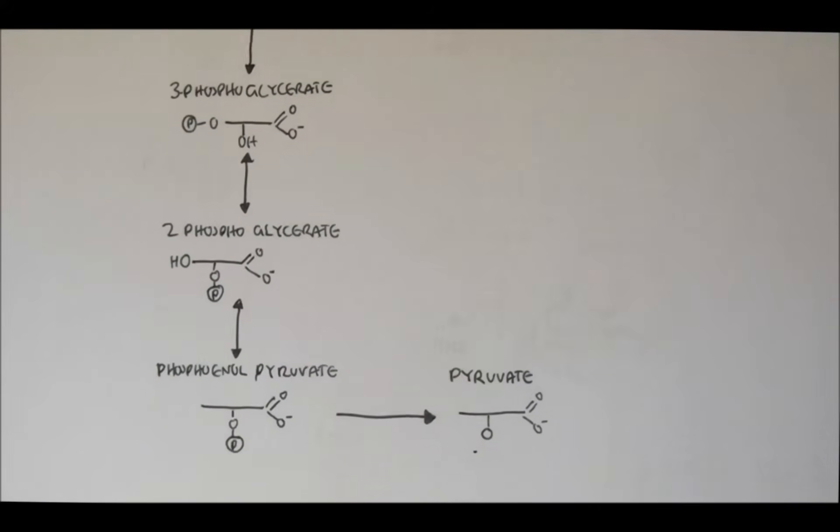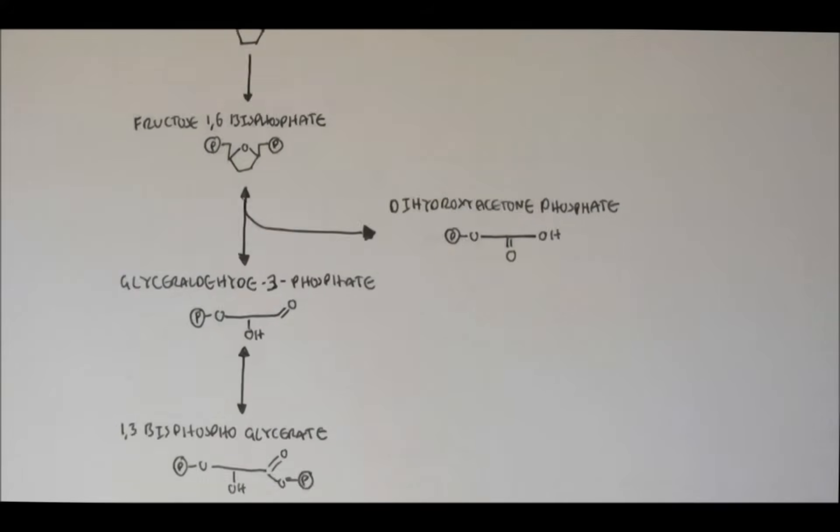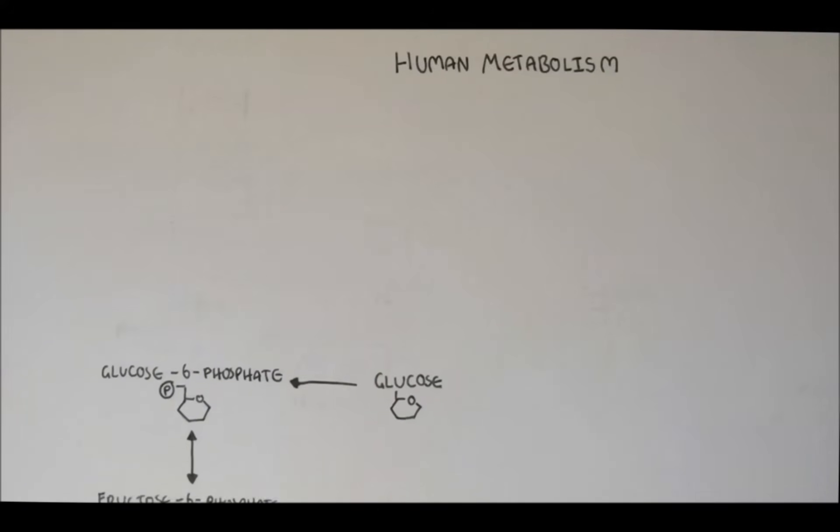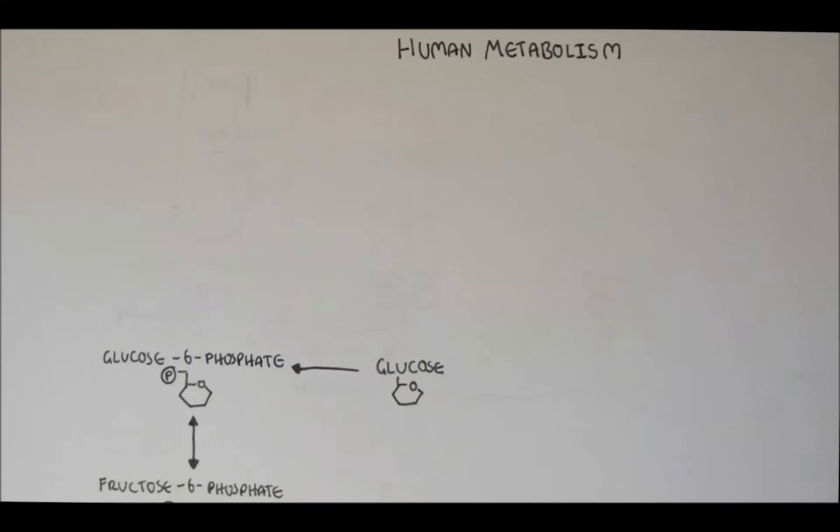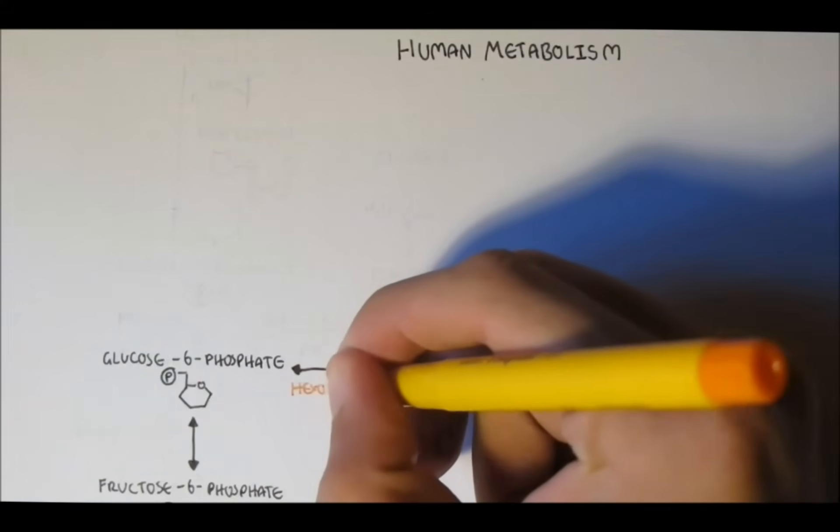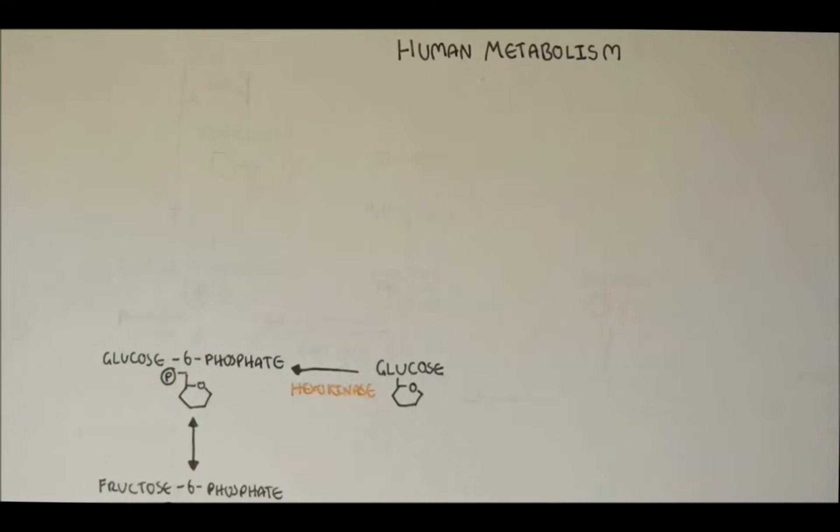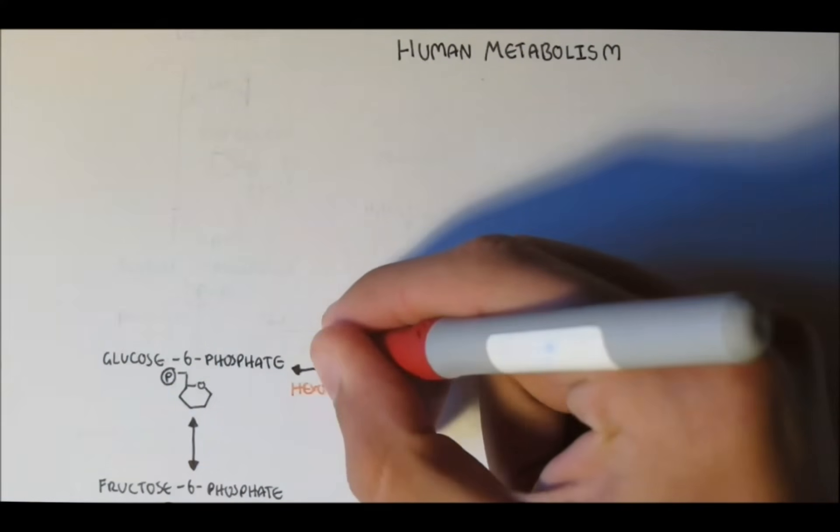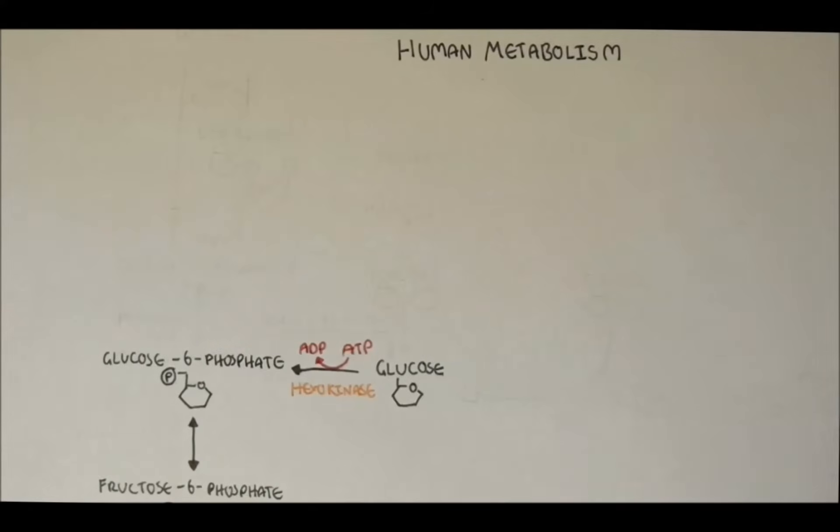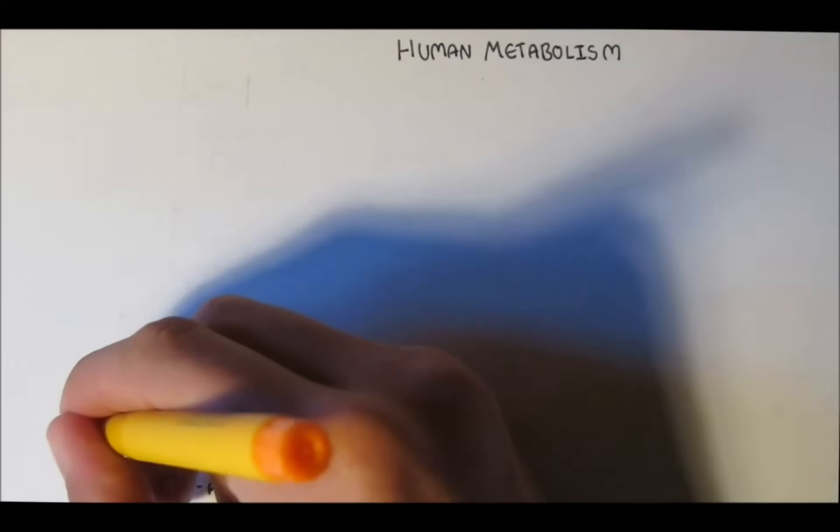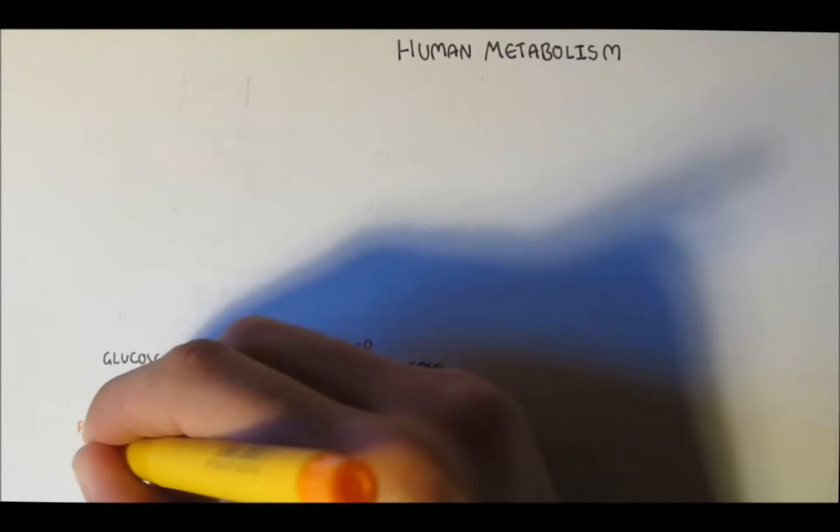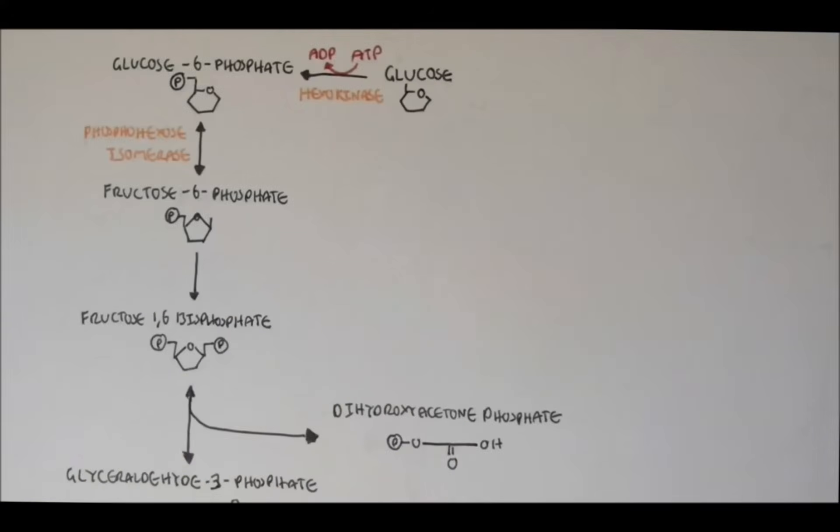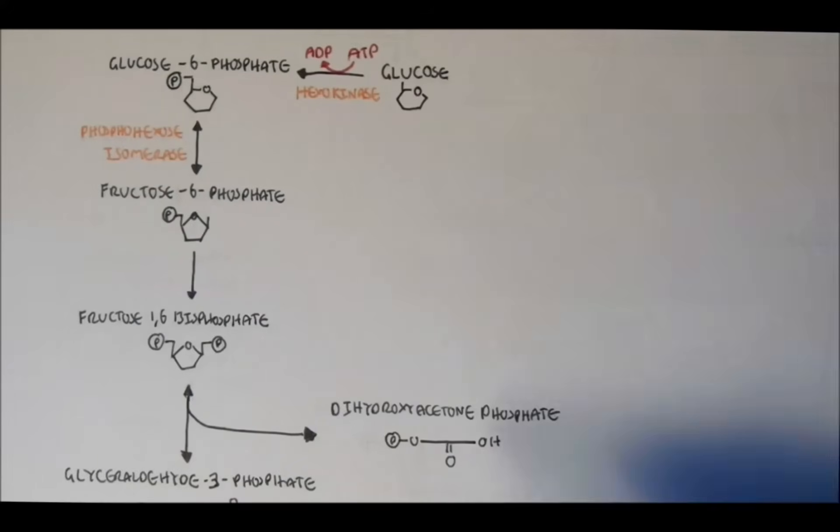So now let's go back and look at the enzymes and stuff. So glucose with the enzyme hexokinase will get a phosphate group from ATP to form glucose-6-phosphate. And this reaction is irreversible, cannot be reversed unless with a different enzyme. Glucose-6-phosphate, then with the enzyme phosphohexose isomerase, will change shape to fructose-6-phosphate, which is an isomer of glucose-6-phosphate. This reaction is reversible.